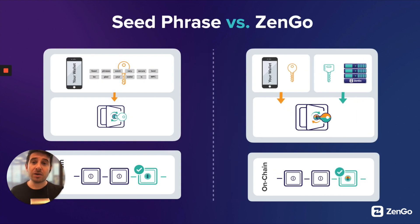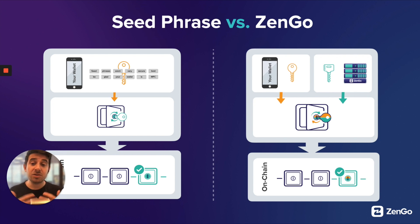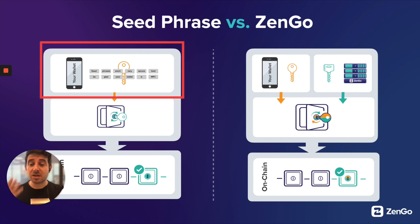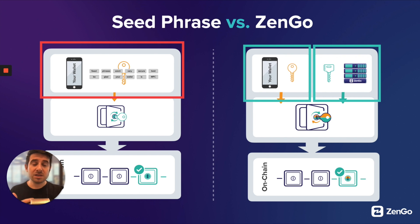One more comparison: both a traditional wallet and the Zengo wallet engage with the blockchain. The nice thing about MPC is it's chain agnostic — it supports Bitcoin, Ethereum, Polygon, Tezos, Dogecoin, and many others. On the left you see the single point of failure with a private key and seed phrase. On the right you see the separation and the power and security that brings.